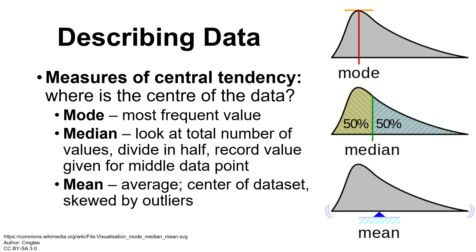You might also remember from high school math that we can talk about the median and the mode. The median is the number right in the center — if we take all of our height measurements and put them in numerical order, with the lowest values on one end and the highest on the other, we find the exact middle of all those values.